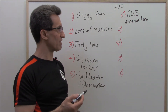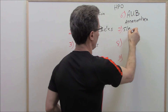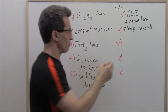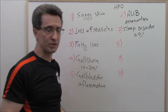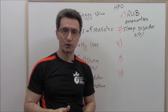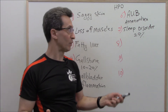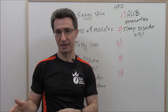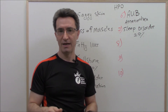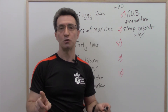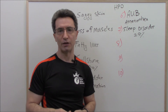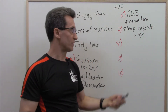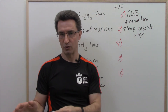Complication number seven is sleep disorder. At the CSSN, we have noticed that about 25% of people who lose weight rapidly may develop sleep disorders — such as difficulty falling asleep or difficulty staying asleep. A few studies show that rapid weight loss can lead to an imbalance between two hormones, adenosine and melatonin, which can lead to sleep disorder.